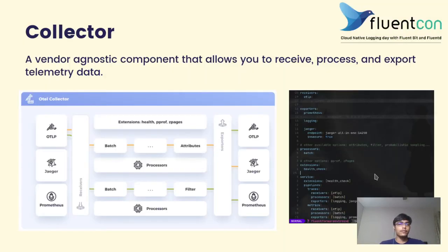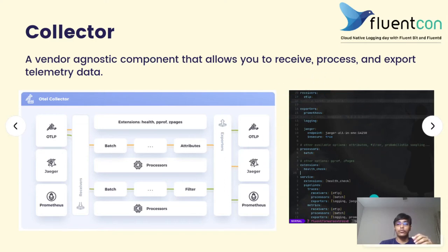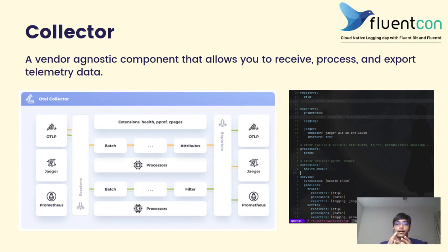The collector is by far one of the most important components of OpenTelemetry because it allows you to receive, process, and export telemetry data. It does this by using config files to define the behavior. A major advantage of this is that it allows you to decouple sampling, queuing, and retry logic from your application code itself. By providing a simple config file, you don't have to change your application code every time you need to make some changes in the collector.